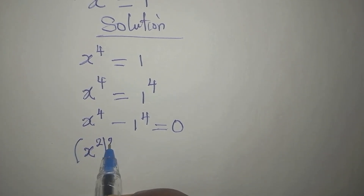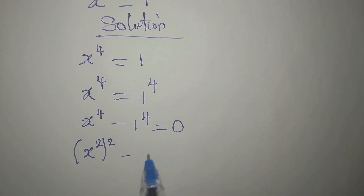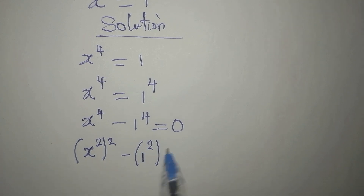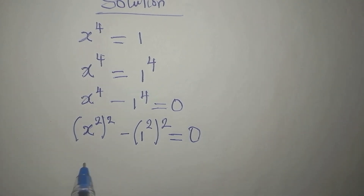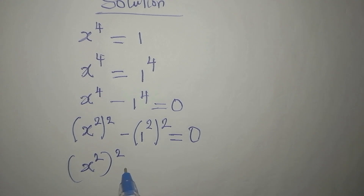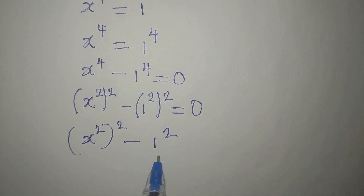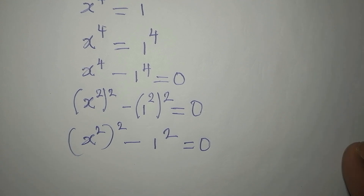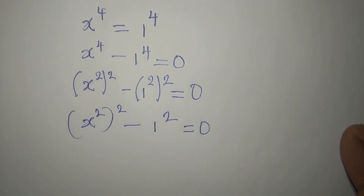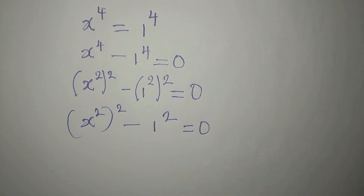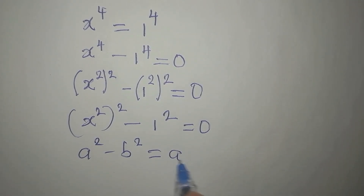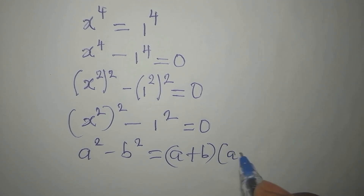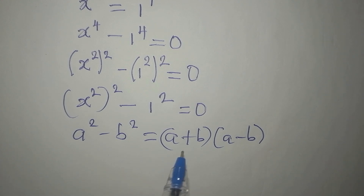From here we can reduce the power, so we have x squared, to the power of 2, minus 1 squared, to the power of 2, equals 0. We have x squared to the power of 2, minus 1 to the power of 2, because 1 squared in the bracket still gives us 1. So everything equals 0, and from here we apply the difference of two squares: a squared minus b squared equals a plus b times a minus b.